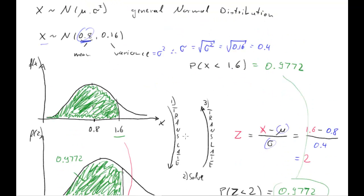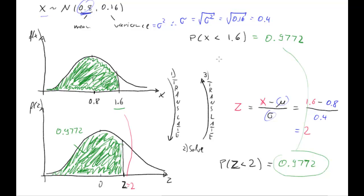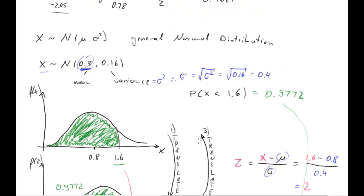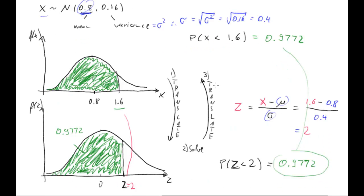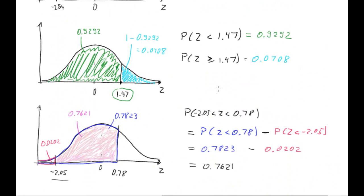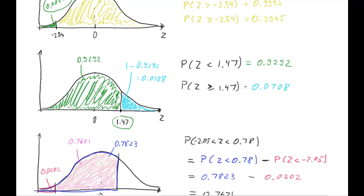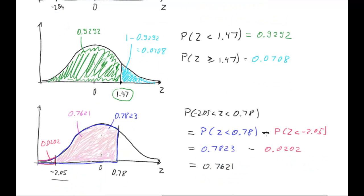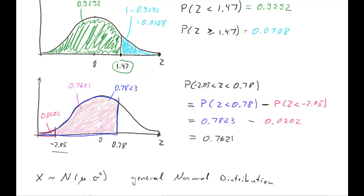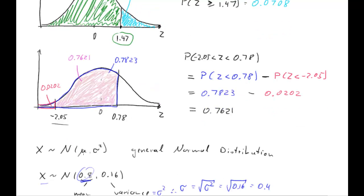This is how we translate from any normal distribution to the standard normal distribution. And that same trick works for probabilities that x is larger than a certain value or that x is between two values — absolutely yes. If you need to calculate an in-between probability in the x world, you just do two translations: translate each boundary value using the same formula, and all the rest works exactly the same. That was the end of this video.